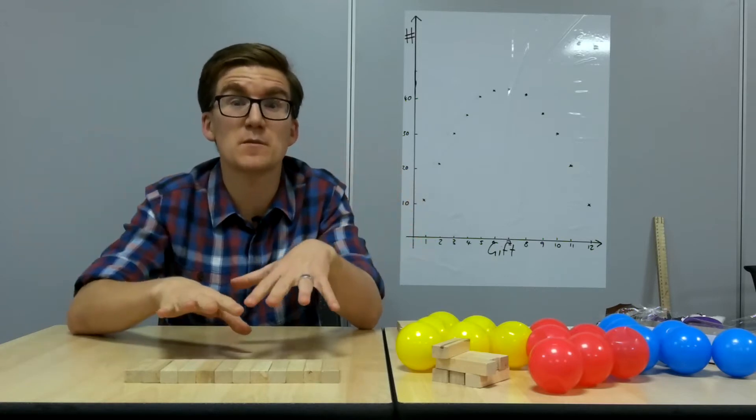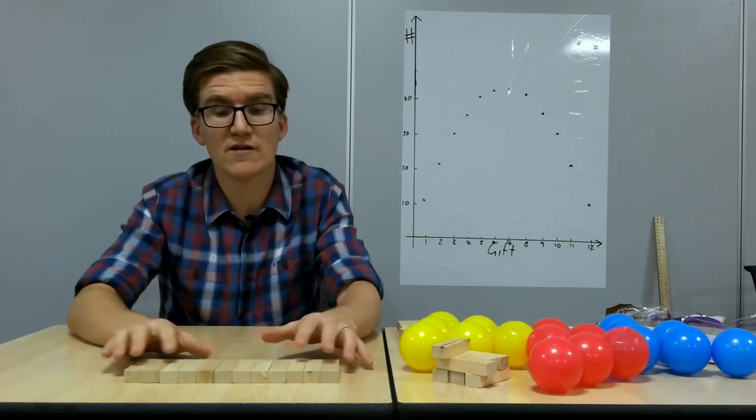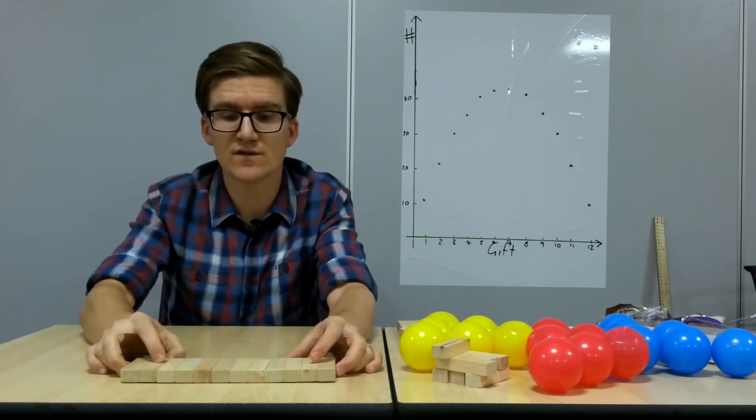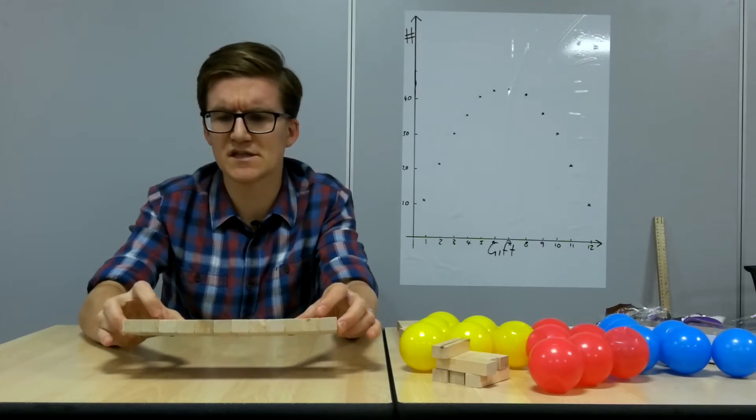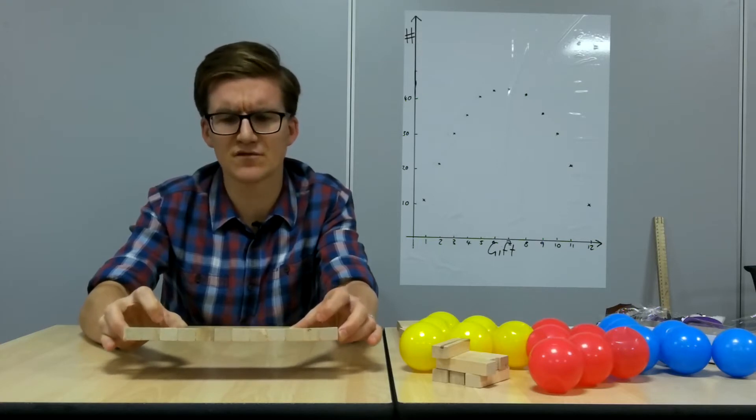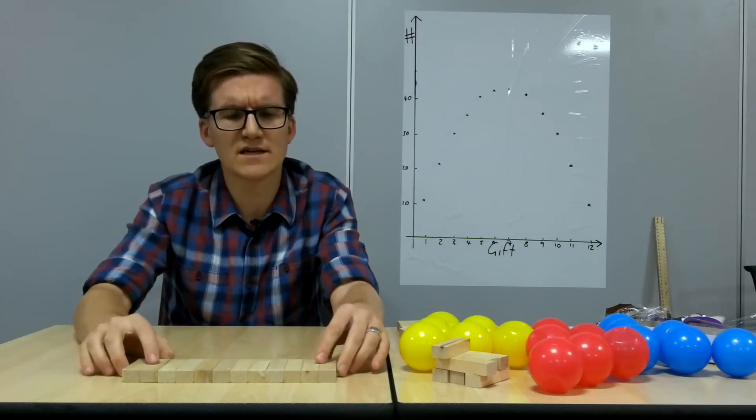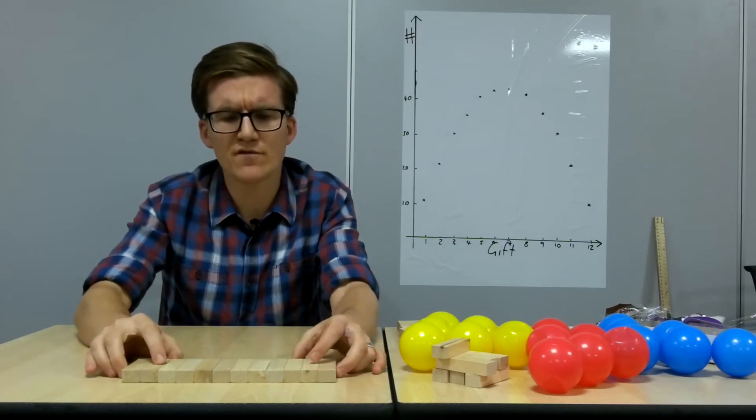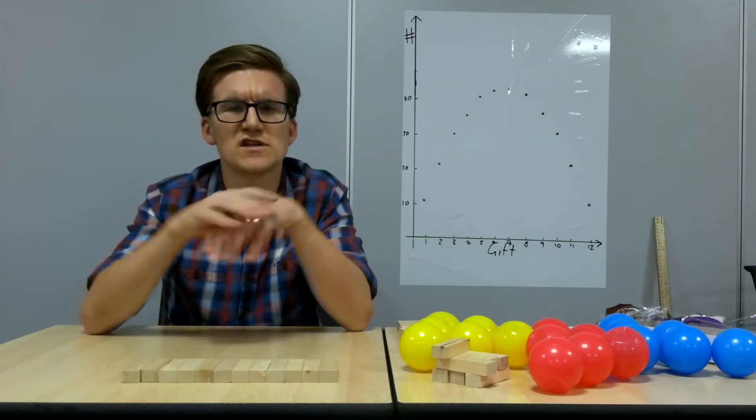Now you might be tempted to go for partridges in a pear tree, right? Because you get one of those every day. So what I've got here is a little rectangle. If you imagine each of these as a gift, because I'm a mathematician, all the gifts can look the same. The block just represents a gift. So what we've got here is 12 lots of one, a rectangle that's one by 12. So over the whole 12 Days of Christmas, you get 12 partridges in pear trees.